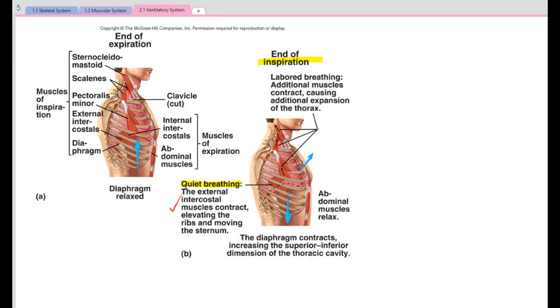They elevate the ribs and sternum so help increase thoracic cavity. Our abdominal muscles relax meaning that our stomach will end up protruding, again increasing thoracic cavity. And the diaphragm contracts so it moves down which increases the superior-inferior dimension of the thoracic cavity.